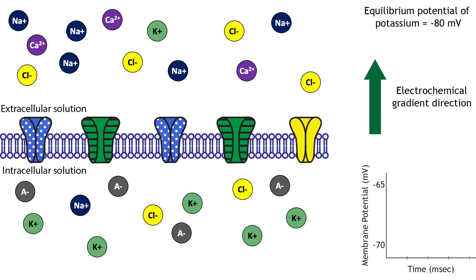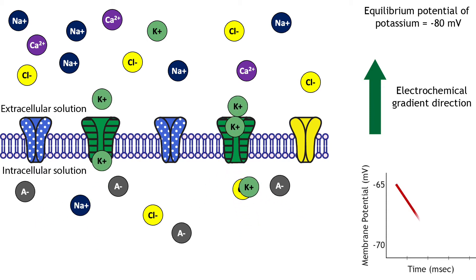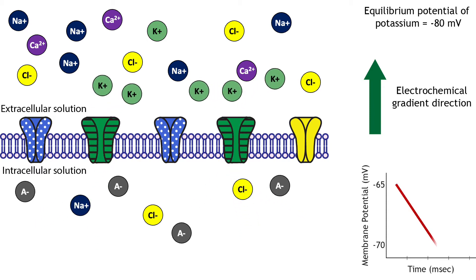Since the membrane is permeable to potassium at rest due to the open non-gated channels, potassium will be able to flow across the membrane. The electrochemical gradients at work will cause potassium to flow out of the cell in order to move the cell's membrane potential towards potassium's equilibrium potential of negative 80 millivolts.